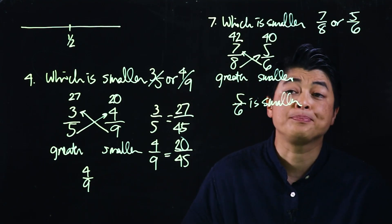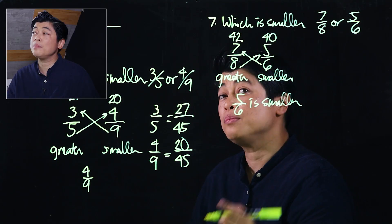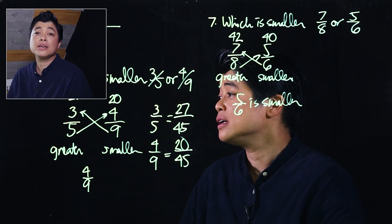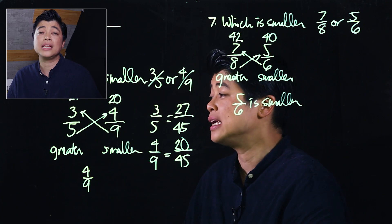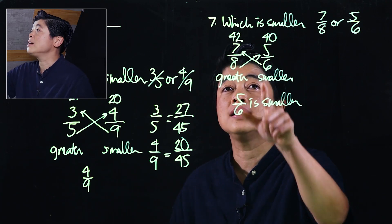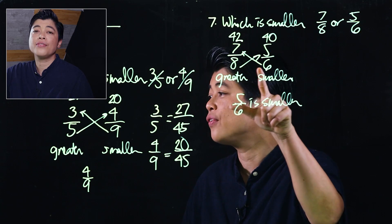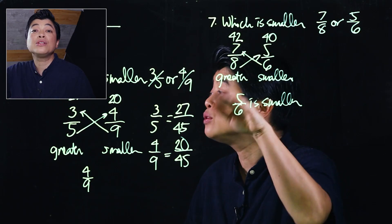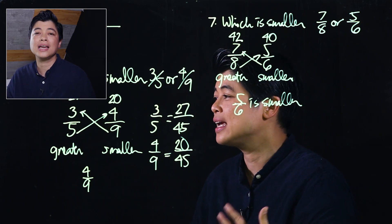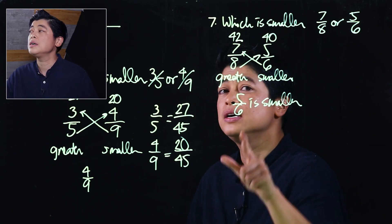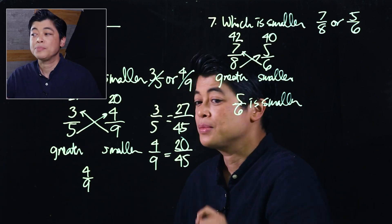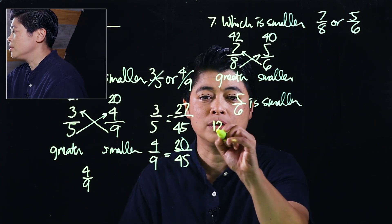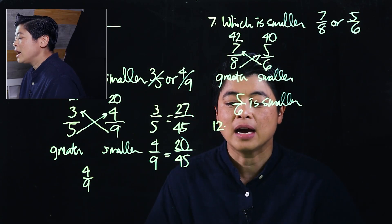The way I'm showing here just cuts the steps down a bit. The book's method would end up with the same 42 over 48 and 40 over 48, but then reduced down to a denominator of 24 — which is again too stressful for the kids. So it's better to just use this cross-multiplication method.